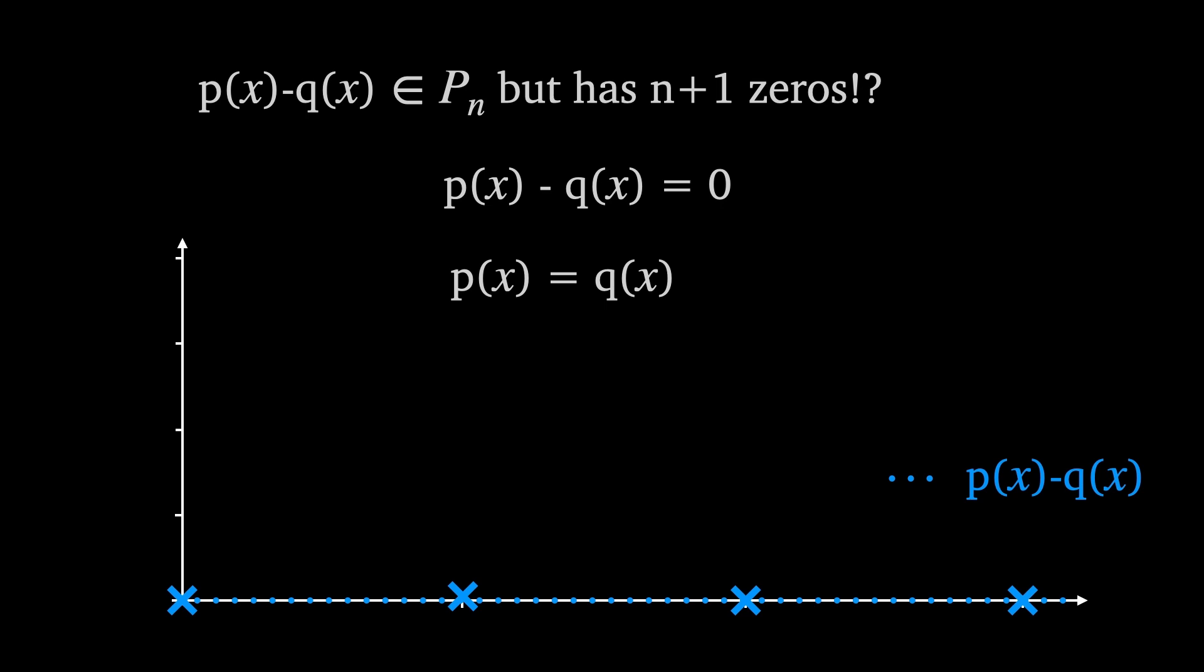This is a contradiction since we assumed that q was not equal to p. Therefore if p interpolates n plus 1 nodes and is in p sub n it is unique.